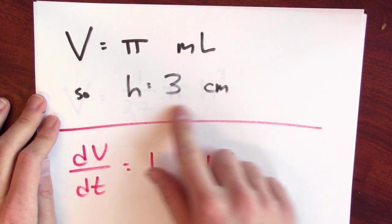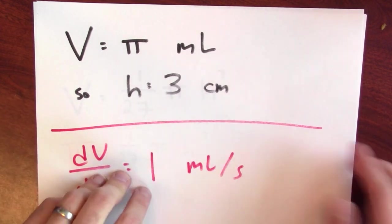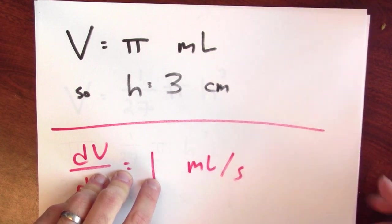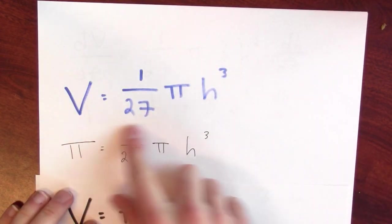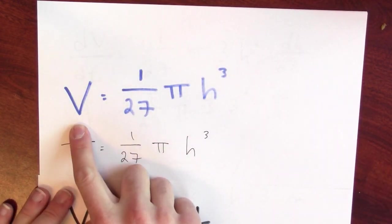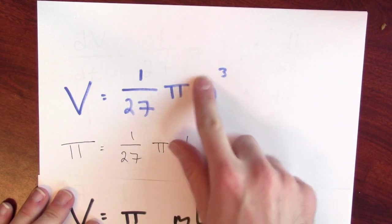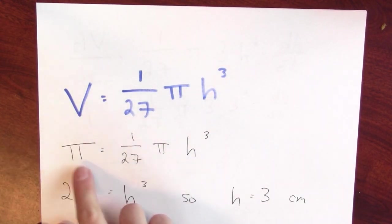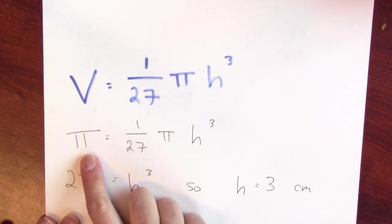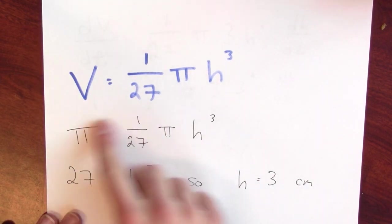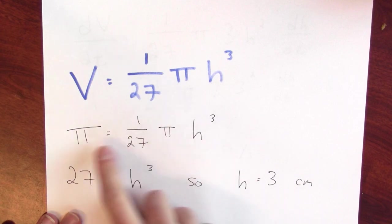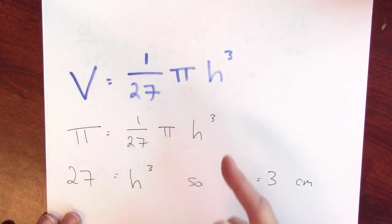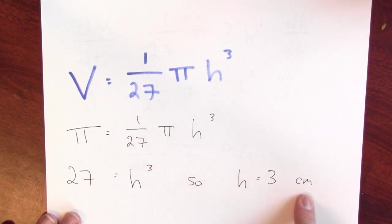Now I'd like to know the current water height, and I'm claiming it's 3 centimeters. I know that because I've got this formula. I know that the volume is 1/27 π times the current water height cubed. And in this particular case, if the volume is π milliliters of water, then I can solve for h. I divide both sides by π and multiply by 27, and I find that 27 is h³. And that means that the current water height is 3 centimeters.